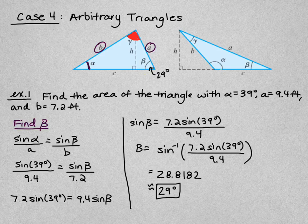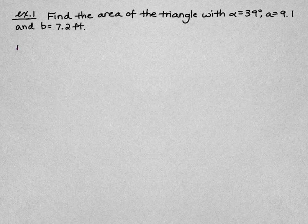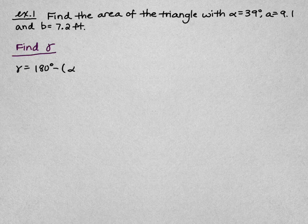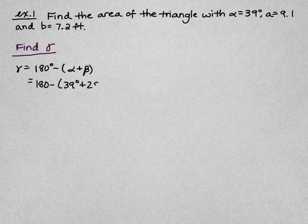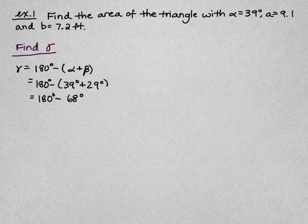So we now know beta is 29° and alpha is 39°. To find gamma — the angle between our two given sides — we subtract the sum of alpha and beta from 180°. Gamma equals 180° minus (39° plus 29°), which is 180° minus 68°, giving us gamma equals 112°.